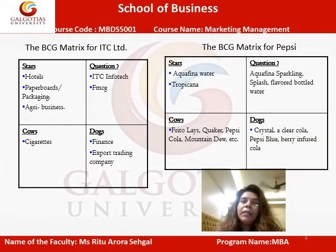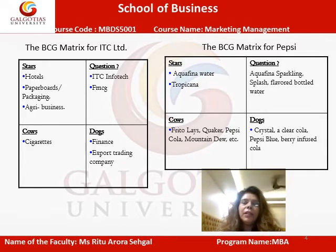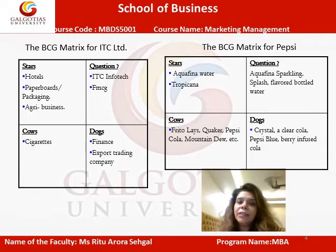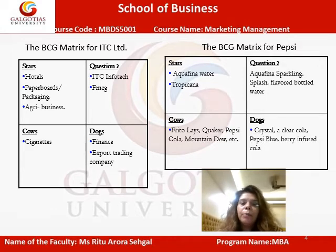It is easy for us to understand which products need to be carried forward and which the company should not invest in. In the four categories, I've given you an example — ITC as a group. When we talk about stars, question marks, cash cows, and dogs, from these terminologies it is sometimes quite clear what the product category is.